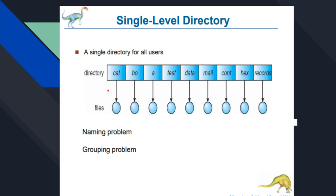What is the problem here? There is a naming problem and a grouping problem. The naming problem is that we cannot have the same name for a file because the directory is also single, so the same name will be in conflict. There will also be a grouping problem — we cannot group the files into defined names.